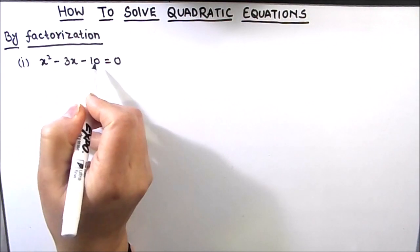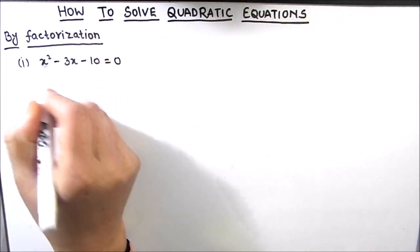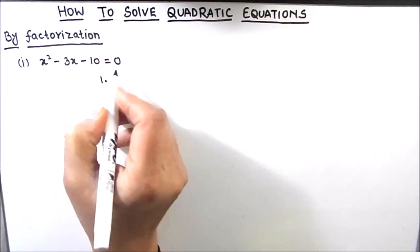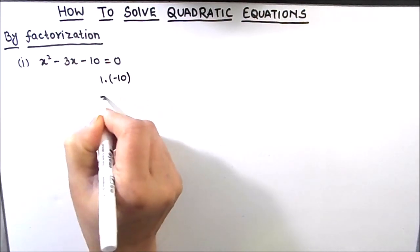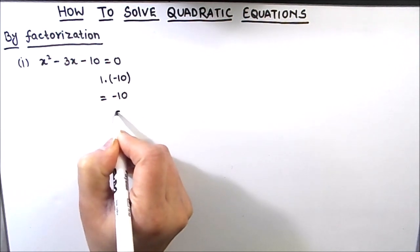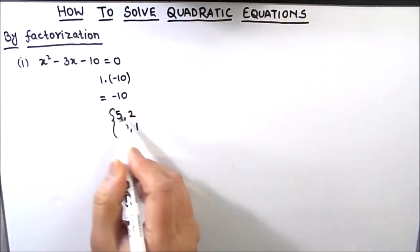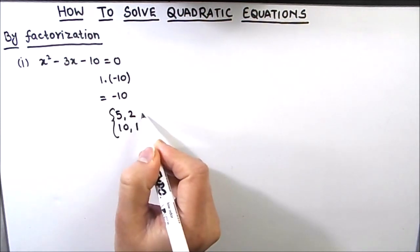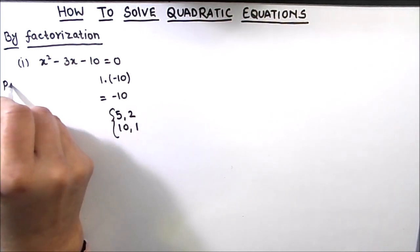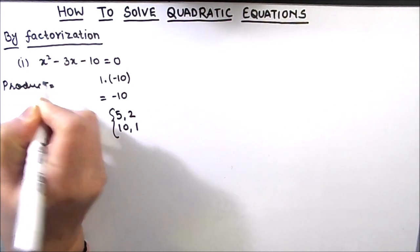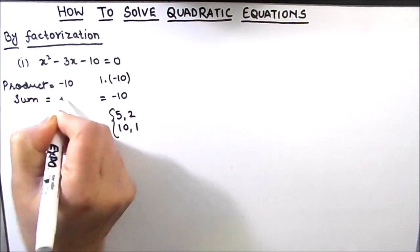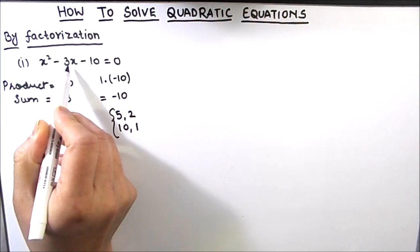For finding the factors, we are going to take the product of the first term and the last term — that is the coefficient of x squared, which is 1, and the constant, which is negative 10. So the product is negative 10. We need to find factors of 10 such that the product of the two factors equals negative 10 and their sum equals negative 3, the coefficient of x or the middle term.